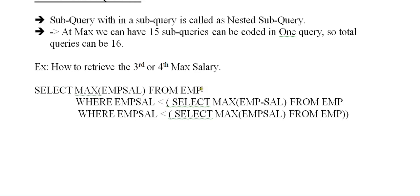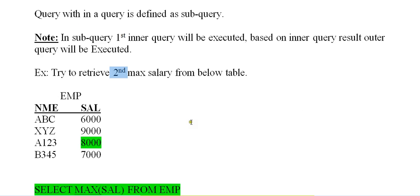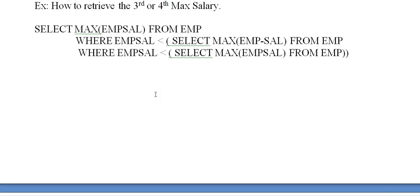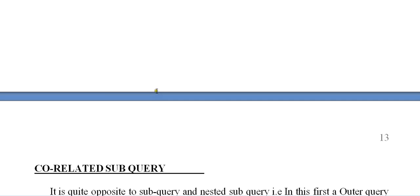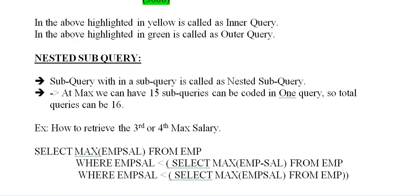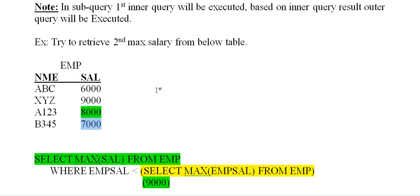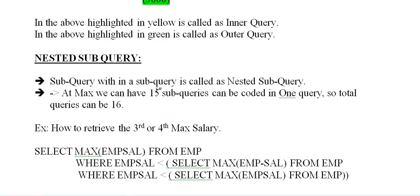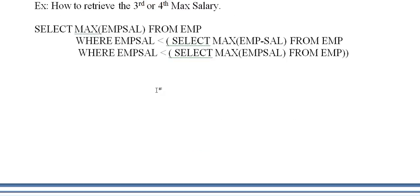For example: SELECT MAX(EMP.salary) FROM EMP WHERE EMP.salary < (SELECT MAX(EMP.salary) FROM EMP WHERE EMP.salary < (SELECT MAX(EMP.salary) FROM EMP)). In this way it will retrieve 7000 as the third max salary.